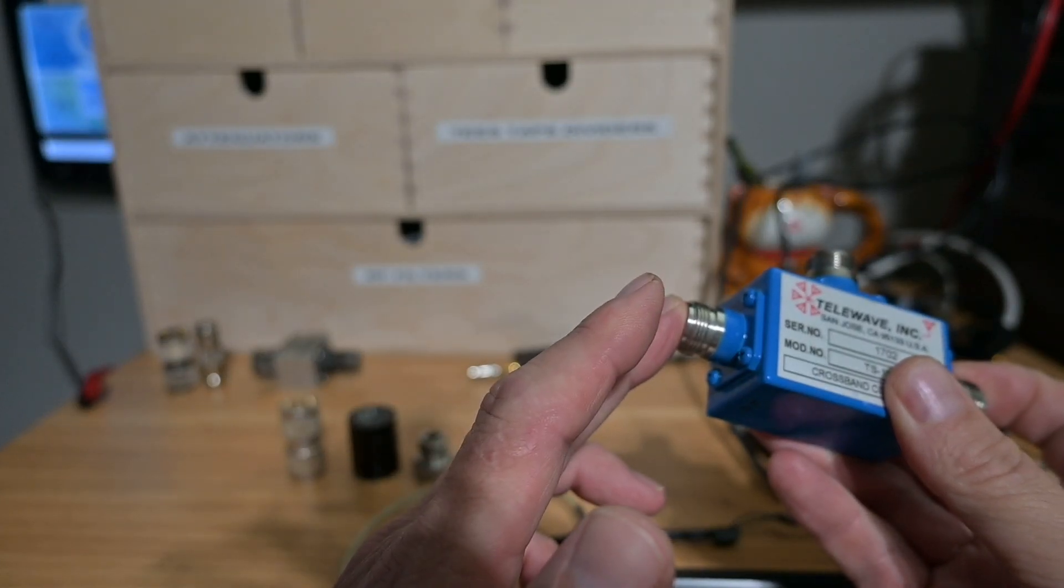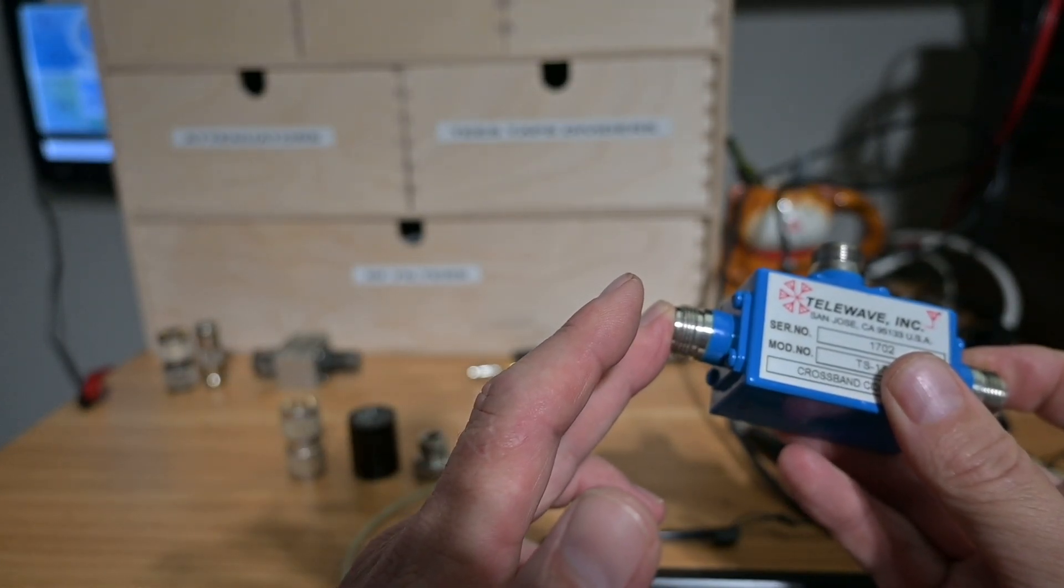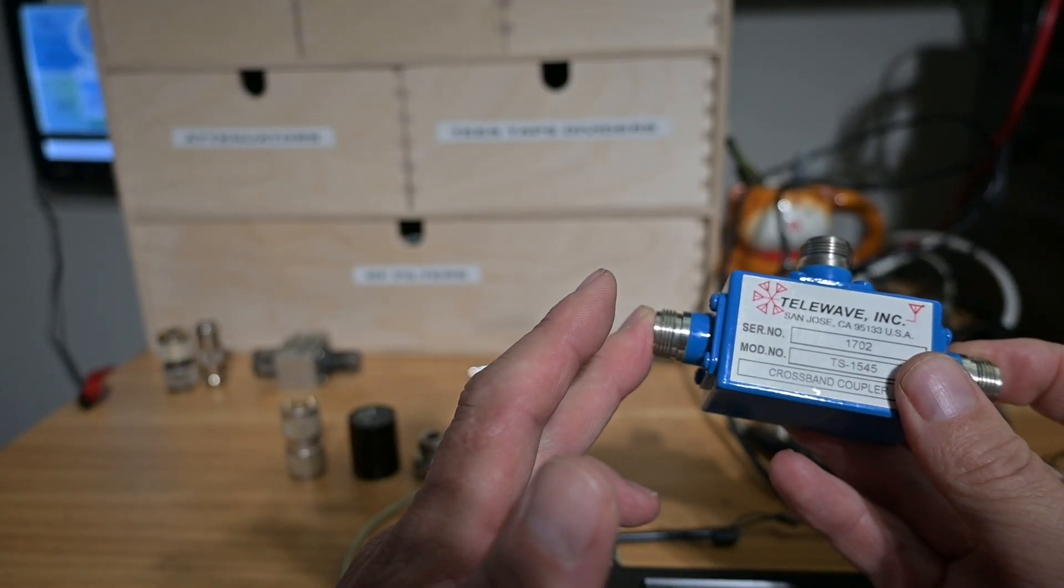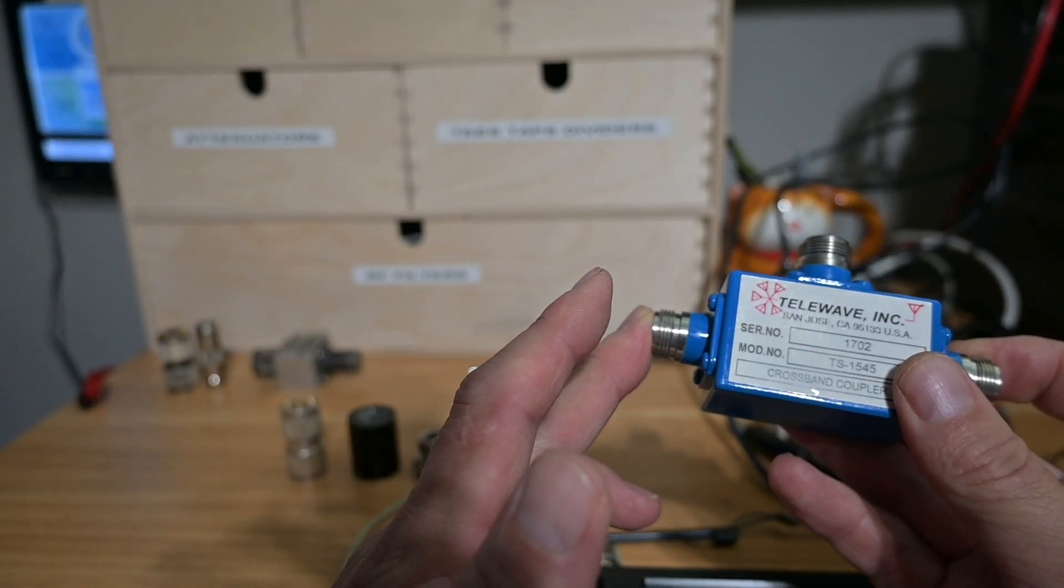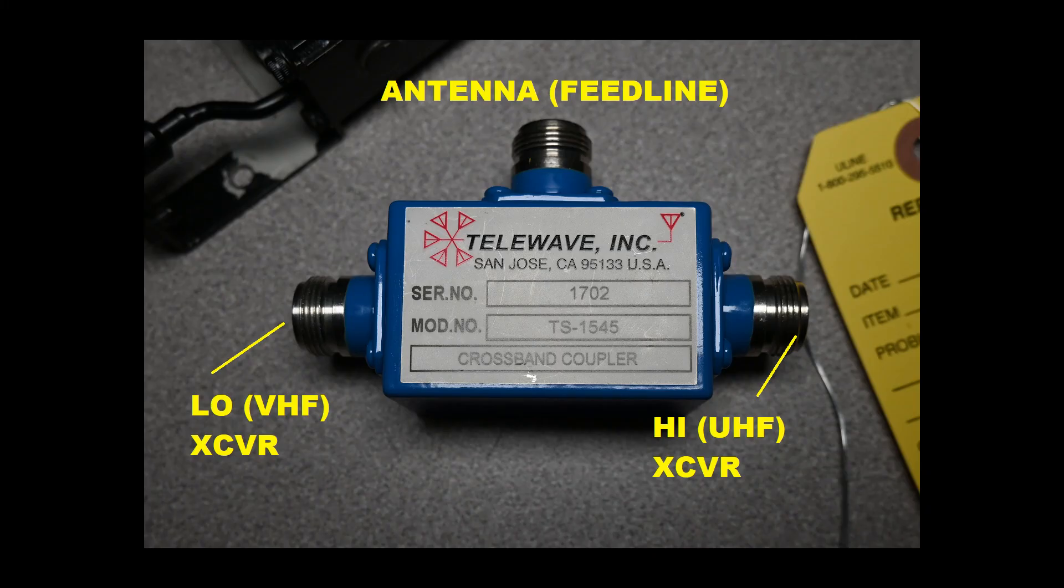Now the crossband coupler in both use cases outlined here allows both transmitters to operate simultaneously in the shared feed line. The crossband coupler does so by providing isolation between these two ports. One is high frequency pass UHF in this model and one is low frequency pass which is VHF in this model.